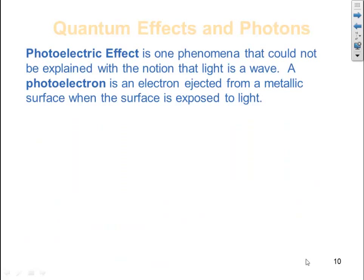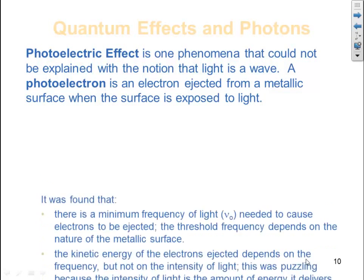The photoelectric effect is one phenomena that could not be explained with the notion that light is a wave. A photoelectron is an electron ejected from a metallic surface when the surface is exposed to light. This is an experiment they were studying, and they came up with the following things.